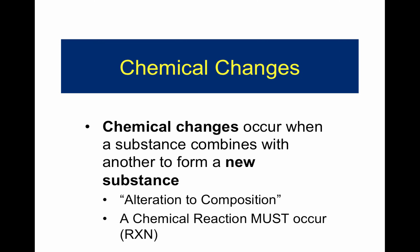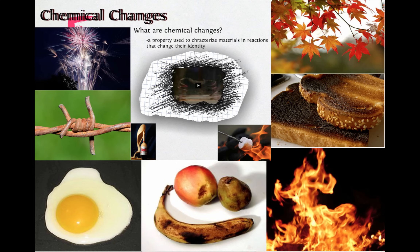I save chemical changes for last because I think they're the easiest to understand. By definition, chemical changes occur when any substance combines with another to form something new — an alteration to the composition of what we used to have. In order to change something chemically, you must have a chemical reaction. Examples include iron rusting, toast burning, leaves changing color, and a banana turning brown.